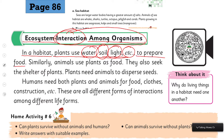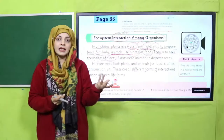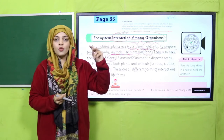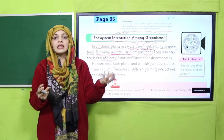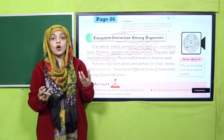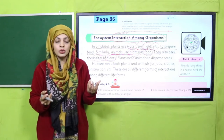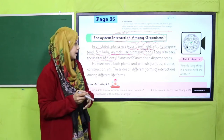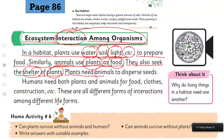Similarly, animals use plants as food. Animals use plants for food, they also seek the shelter of plants. Plants prepare their own food through non-living components like air, water, sunlight, and soil. Animals get food from plants, they get air to breathe from plants, and they also seek shelter. Animals often build their homes under plants.